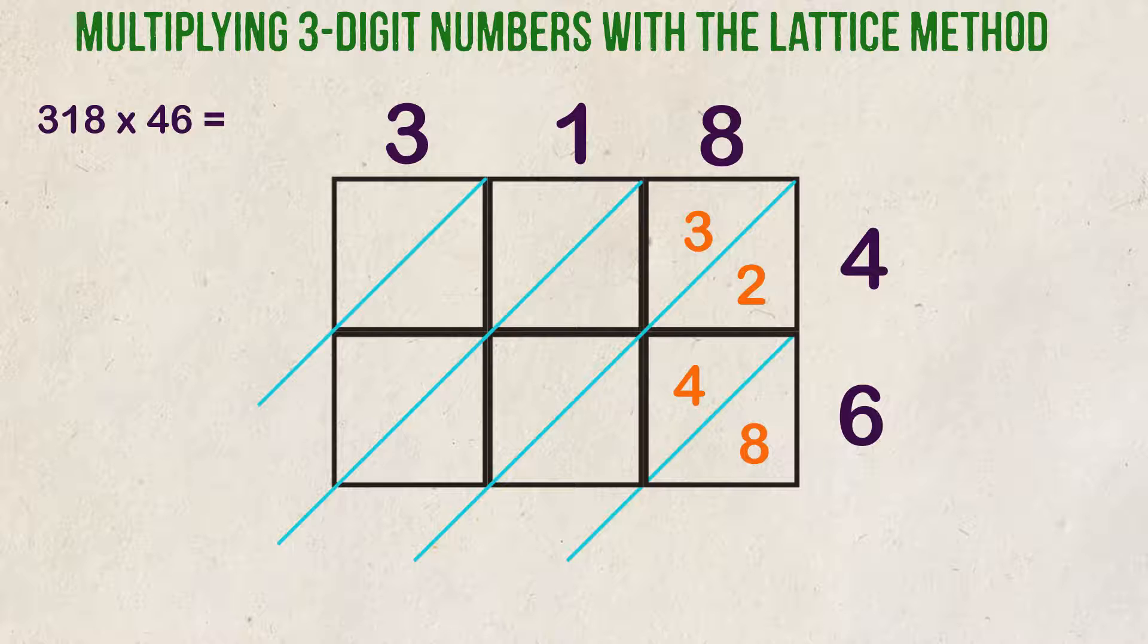We next move to the middle column and we're going to multiply everything by one. One times four is four. Since there's no tens digit in four, we simply put a zero on the left-hand side and four on the right. Next is one times six. Zero goes on the left, six goes on the right.